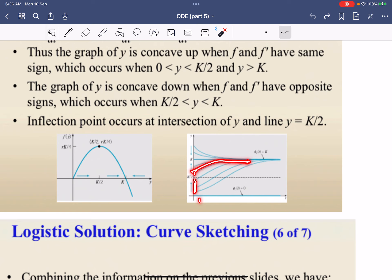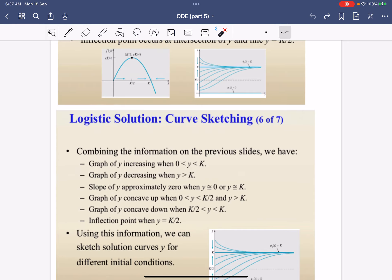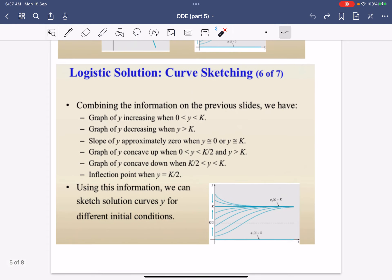For those below K/2, it's also increasing but there's a change in concavity—it's concave up first, then concave down. So you can see how the solutions will roughly look. If you combine all the information, you get this curve.